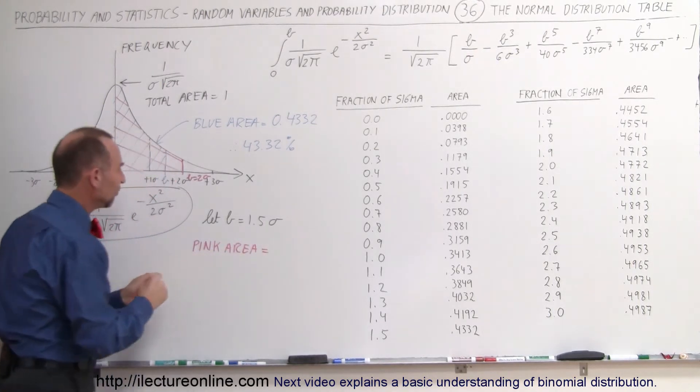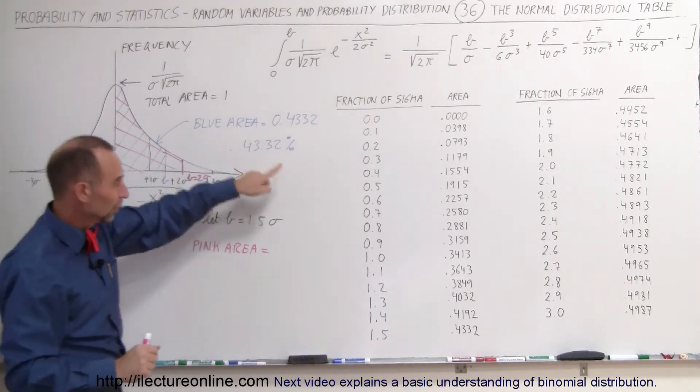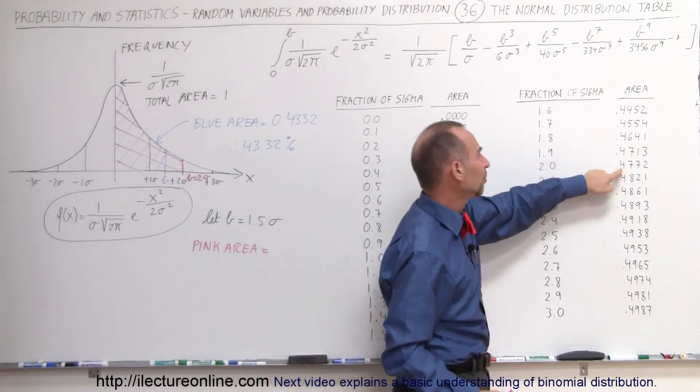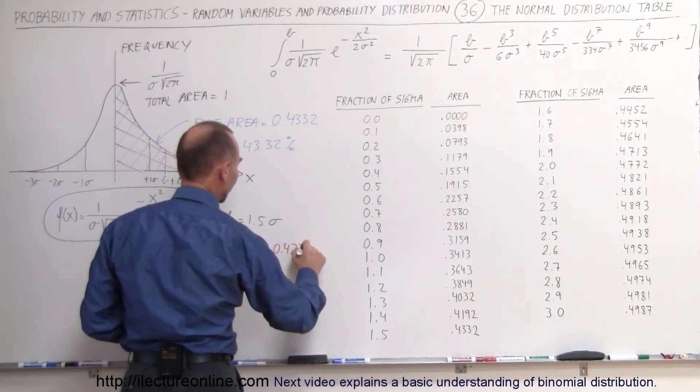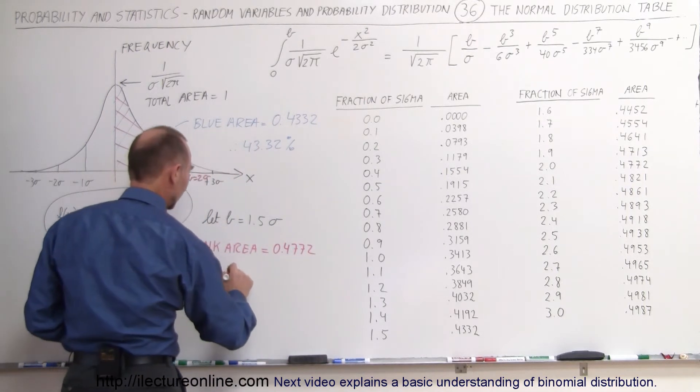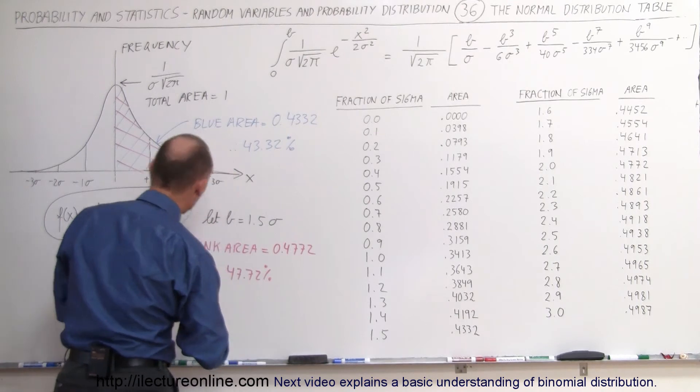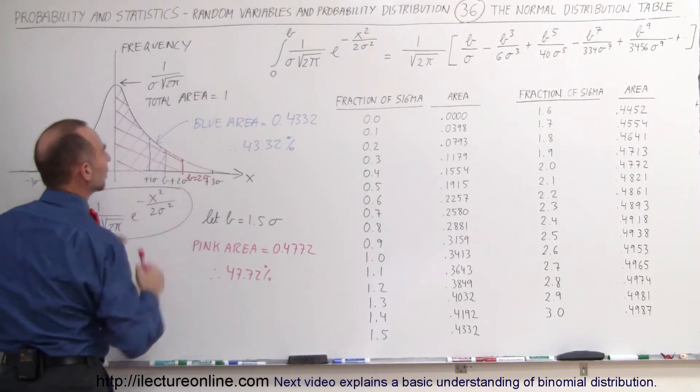Again, what we do is we find the value in the table for b. In this case, b is 2 sigma. So we come up here, 2 sigma is right over here. And we come over here. So we know that the area is 0.4772. The area is 0.4772, which means that 47.72% of the total area falls within those two limits, from x equals 0 to x equals 2 sigma.